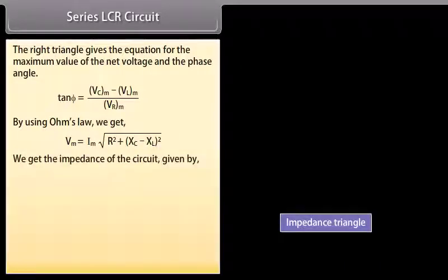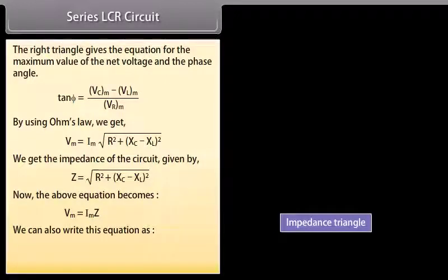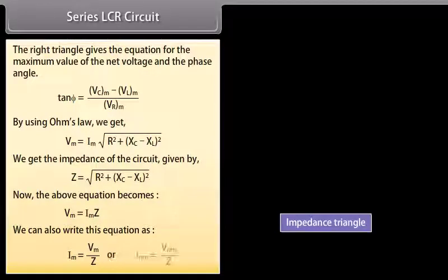The impedance of the circuit is given by Z = √(R² + (XC − XL)²). The equation becomes Vm = Im × Z, which can also be written as Im = Vm / Z, or Irms = Vrms / Z.